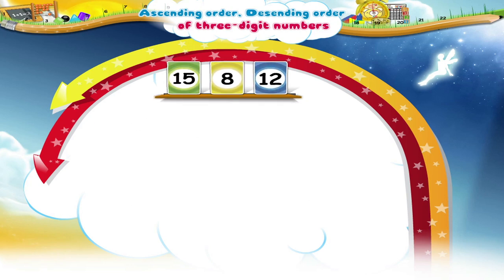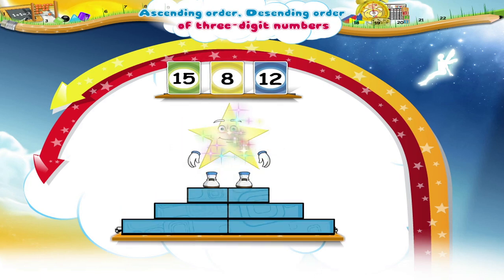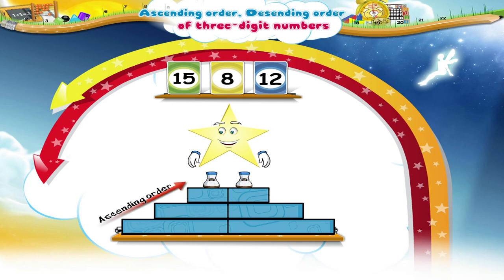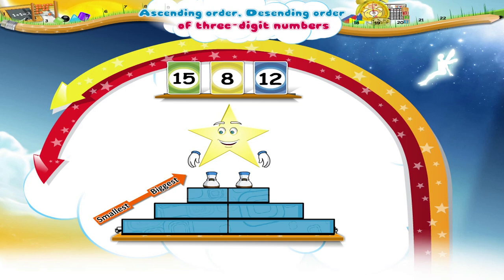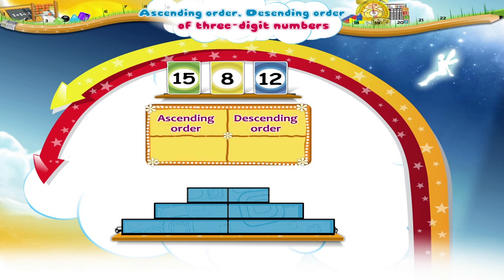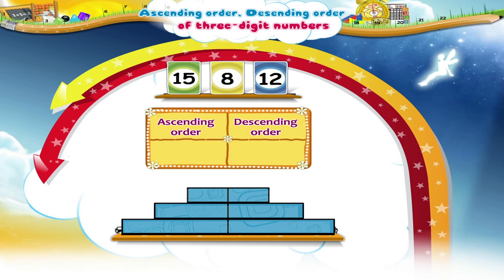Here are some stickers with numbers. Put them on the steps in the ascending order, that is, from the smallest to the biggest. Very good! So now, tell me the ascending order of these numbers. The ascending order is 8, 12 and 15.